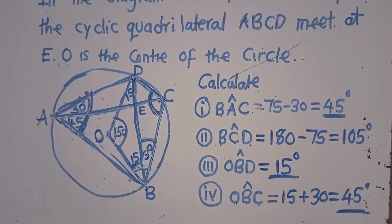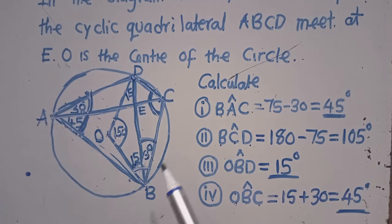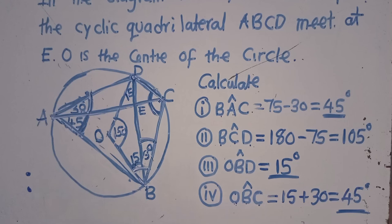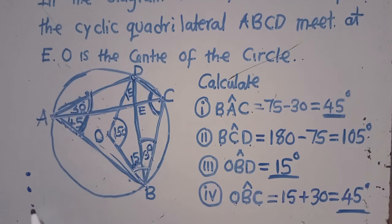I've used circle properties to answer these questions: the angle at the center is twice bigger than the angle at the circumference, angles on the same chord are equal, and interior opposite angles of a cyclic quadrilateral add up to 180. I used three properties to answer this question. All the properties of circles are supposed to be known. Hope you've seen how I've answered this — this is how you are supposed to answer it.